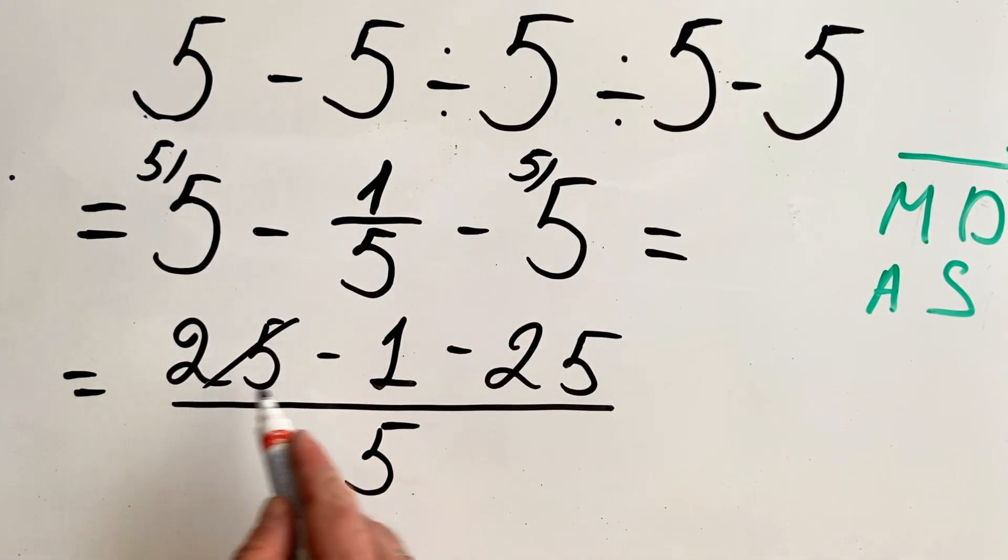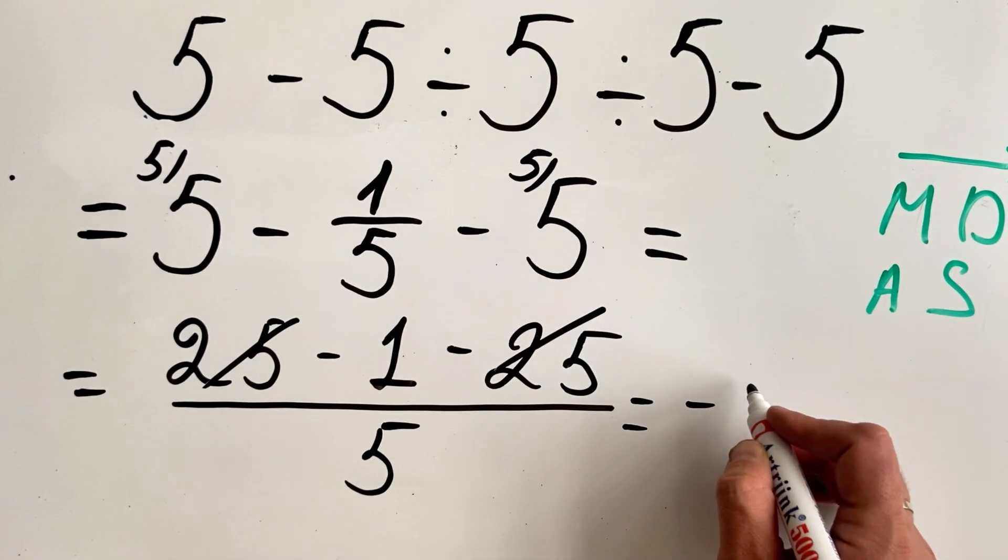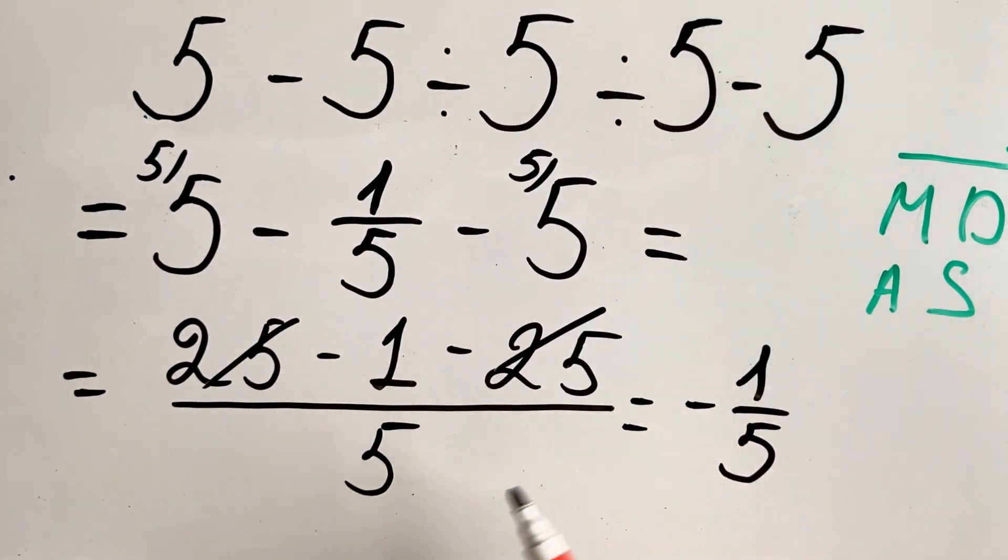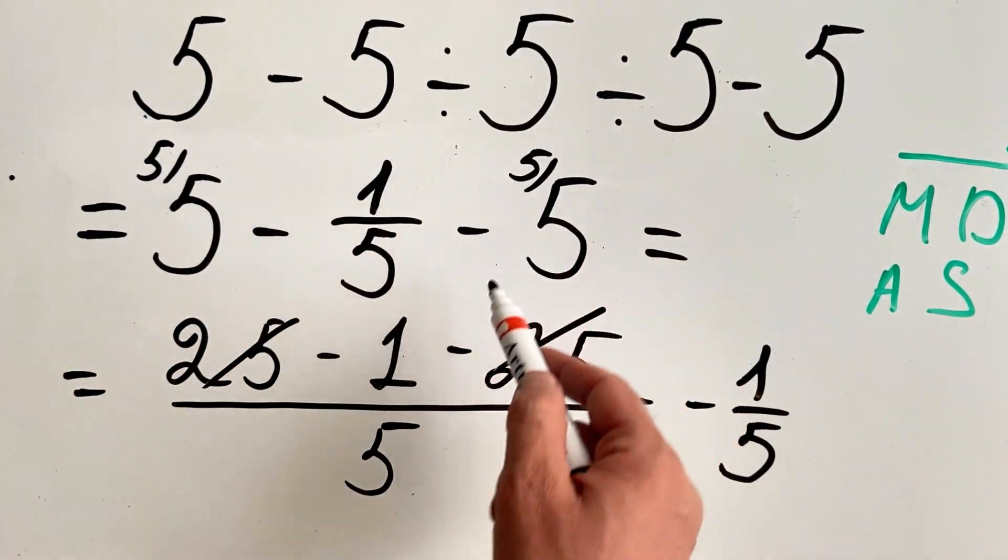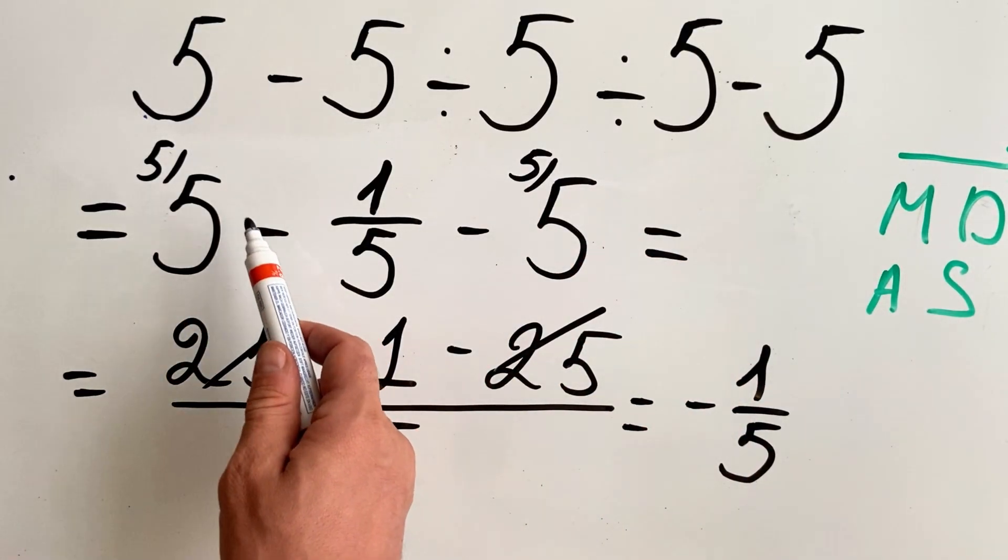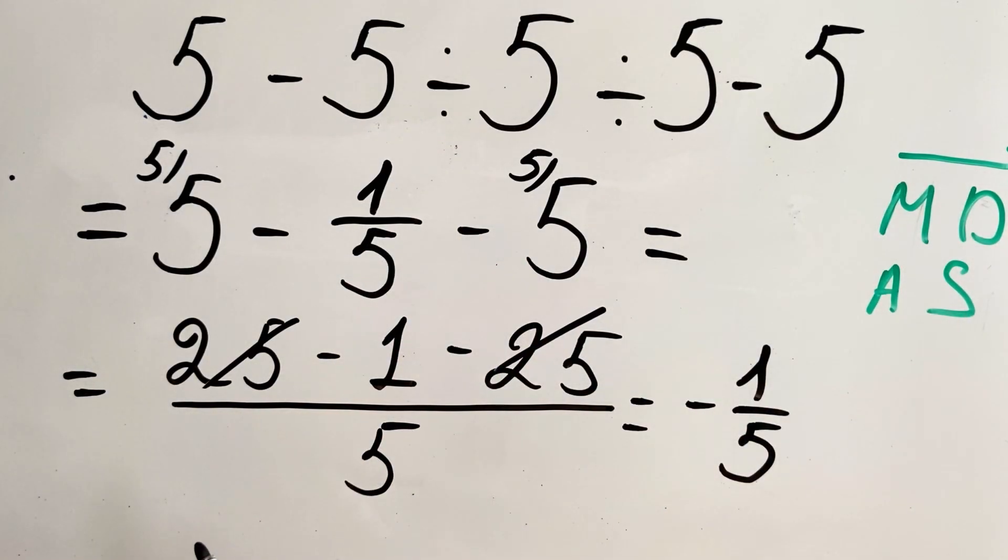So 25 and 25, we are simplifying and what we get is minus 1 over 5. So before you jump in the comments saying that you could have simplified, yes you can simplify, but I wanted to show you the method in case you have a way bigger variety of numbers.